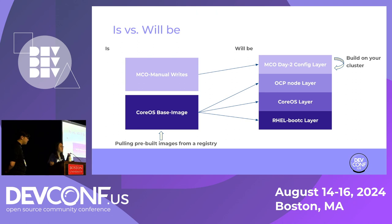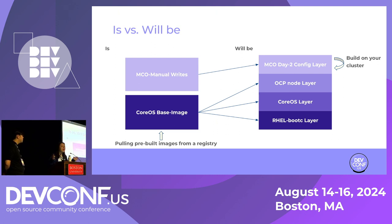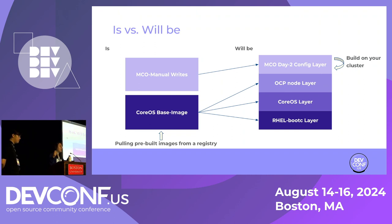There's also the case where if you SSH into your node and make a change yourself, it results in a lot of the bugs we see - people complaining: why are my nodes all degraded? I just made a little change. This is due to config drift. When you SSH into the node and Machine Config Operator takes back control, there's a difference between what the configuration should look like according to the Machine Config and what it actually looks like because of the change you made. This becomes problematic.